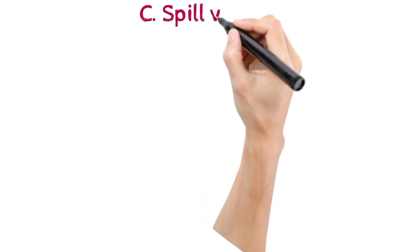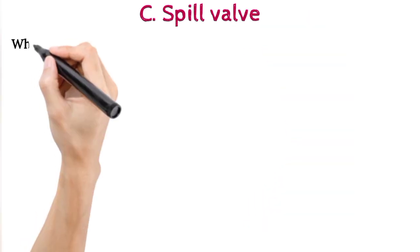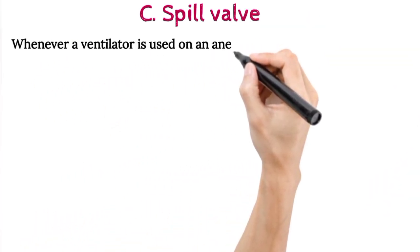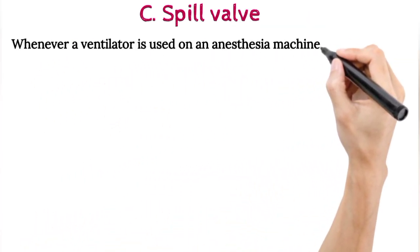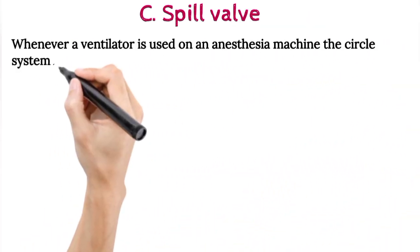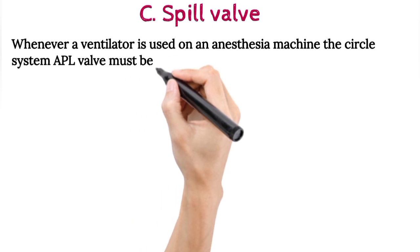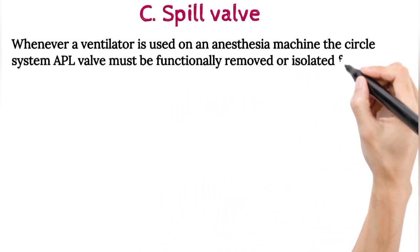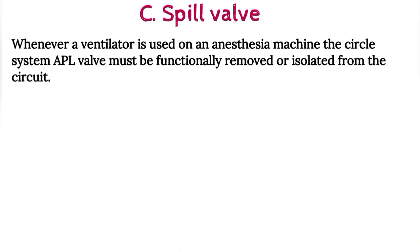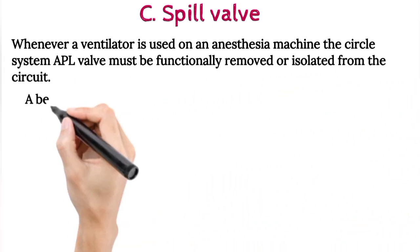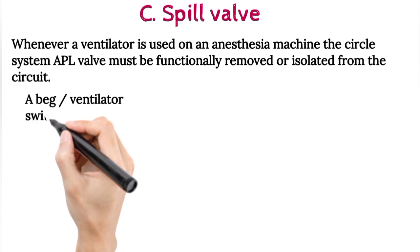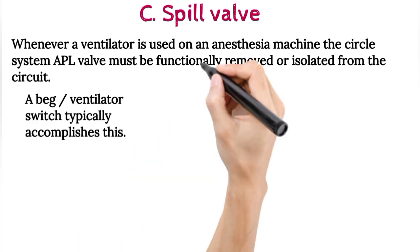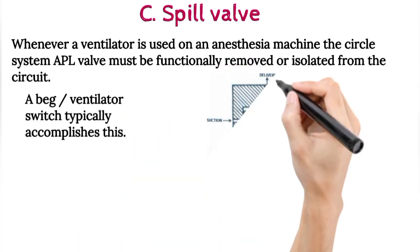Spill valve: whenever a ventilator is used on an anesthesia machine, the circle system APL valve must be functionally removed or isolated from the circuit. A bag or ventilator switch typically accomplishes this.